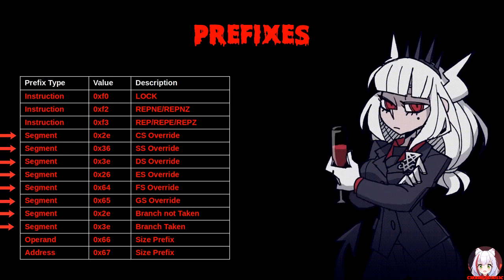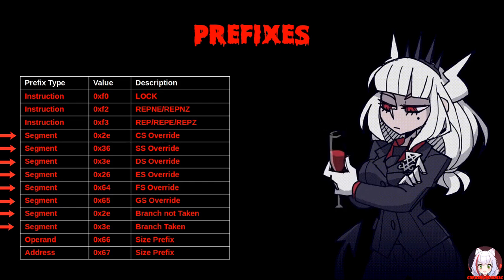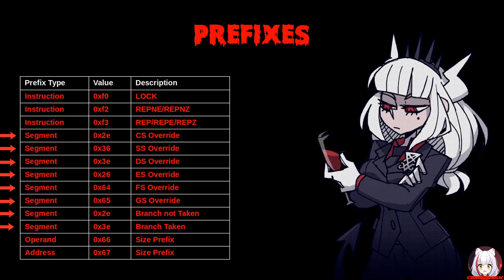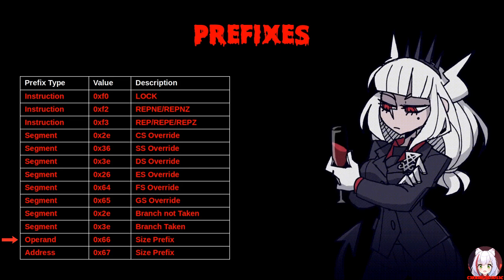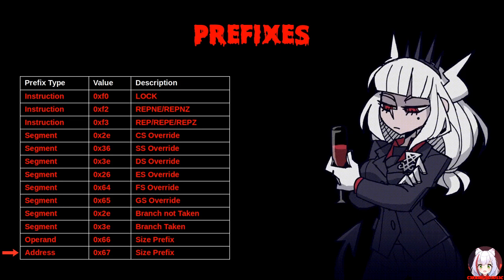Segment overrides are used with instructions that reference non-stack memory. The default segment is implied by the instruction, and using a specific override forces the use of the specified segment for memory operands. The operand size override prefix allows a program to switch between 16 and 32-bit operand sizes. The address size override prefix allows a program to switch between 16 and 32-bit addressing.